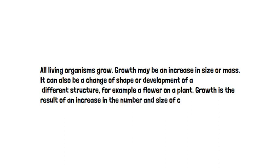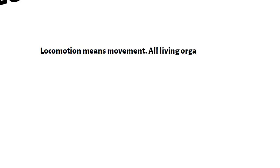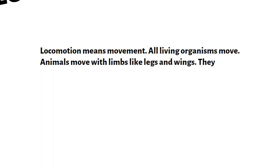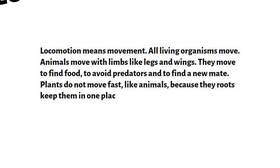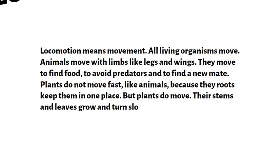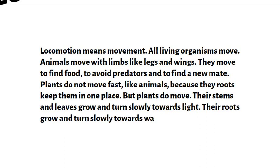Number five, we have locomotion. Locomotion means movement. All living organisms move. Animals move with limbs like legs and wings — they move to find food, to avoid predators, and to find a mate. Plants do not move fast like animals because their roots keep them in one place, but plants do move: their stems and leaves grow and turn slowly towards light, and their roots grow and turn slowly towards water.